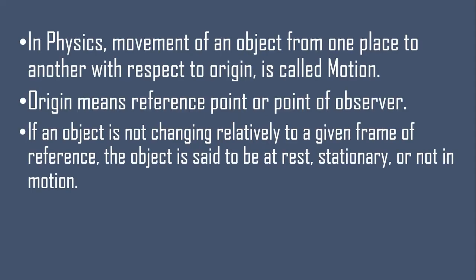In this video we are going to study about motion and types of motion — uniform motion, non-uniform motion, displacement, distance, and what are scalar quantities and vector quantities. So first, what is motion? In physics, movement of any object from one place to another with respect to origin is called motion.